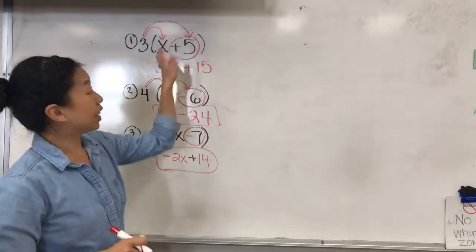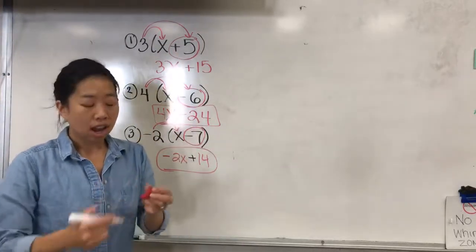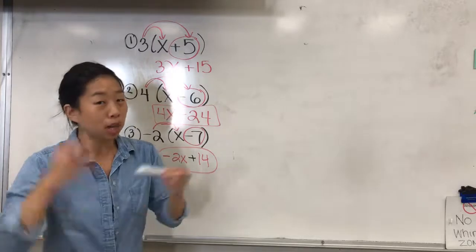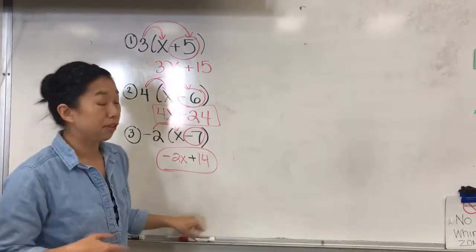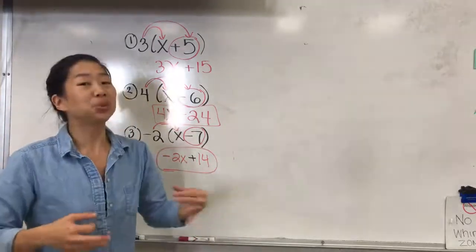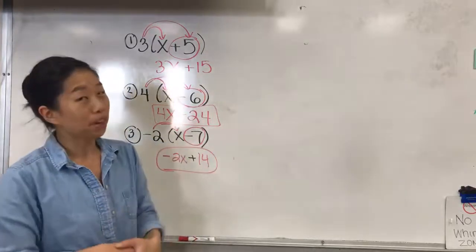So I have found that circling, using a term like rainbow to help trigger students' memory of the fact that it means multiply, has really helped my students experience success with distributive property.